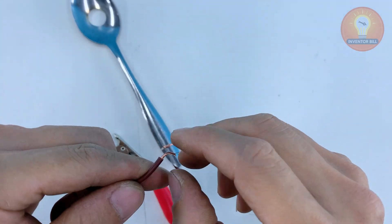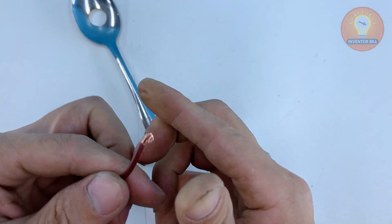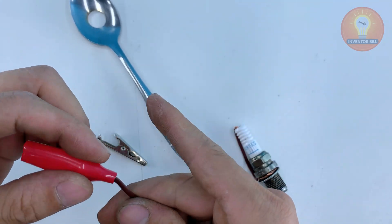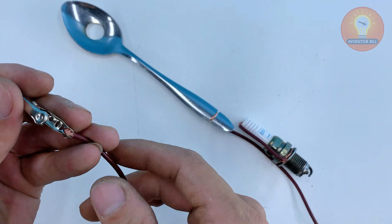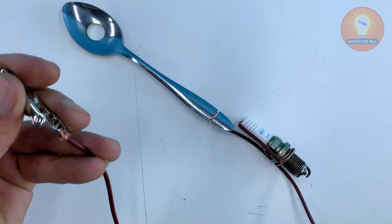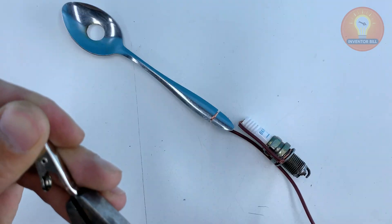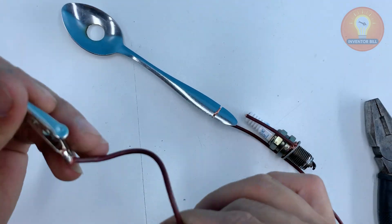Once it feels snug, take the other end of that same wire and secure it to a small alligator clip. This clip is what lets you connect the spoon to the power source later on. Keep the wire neat, keep the wraps tight, and you'll have a solid electrical path ready for heating and welding.